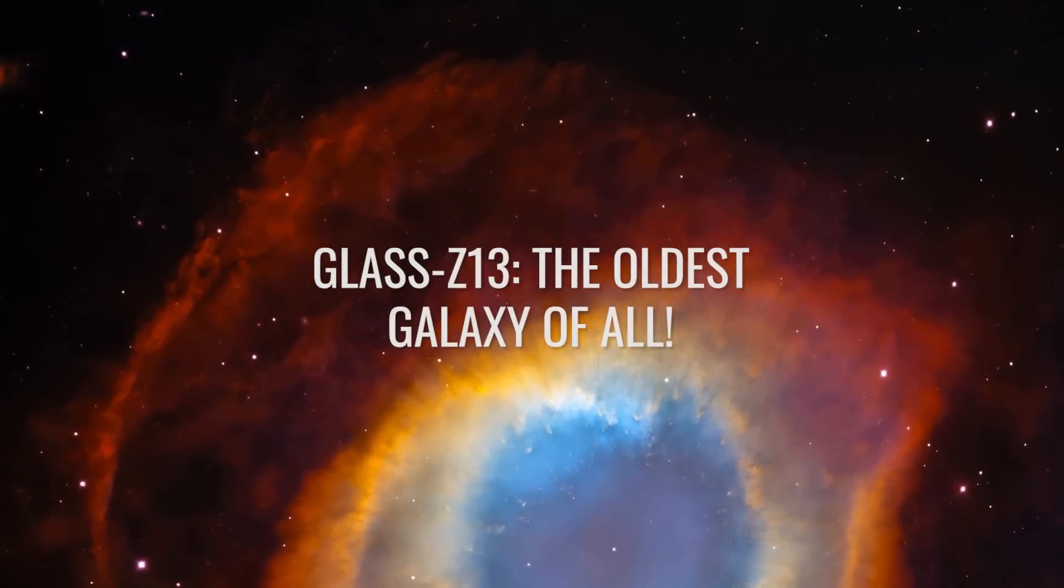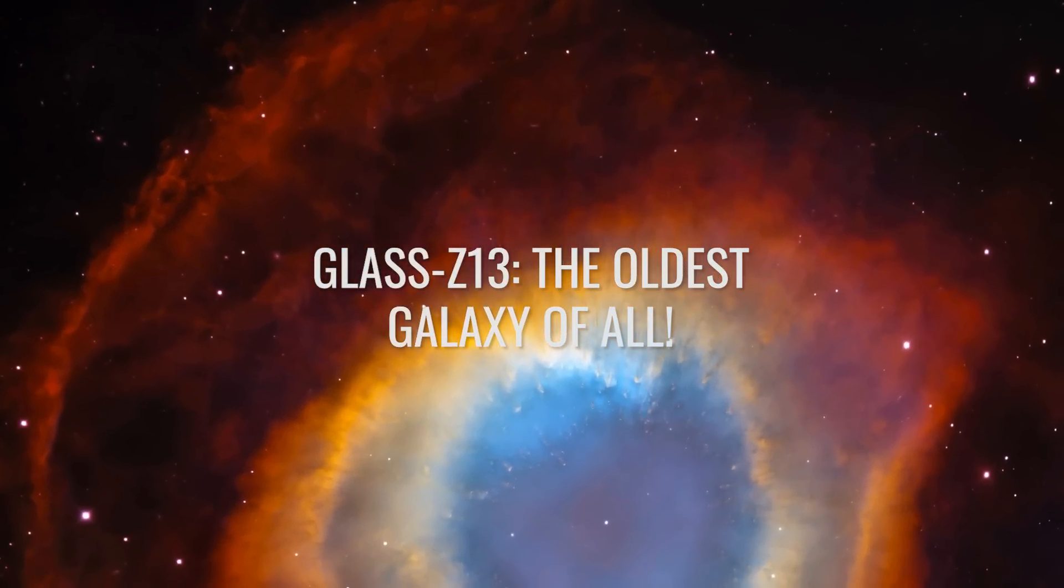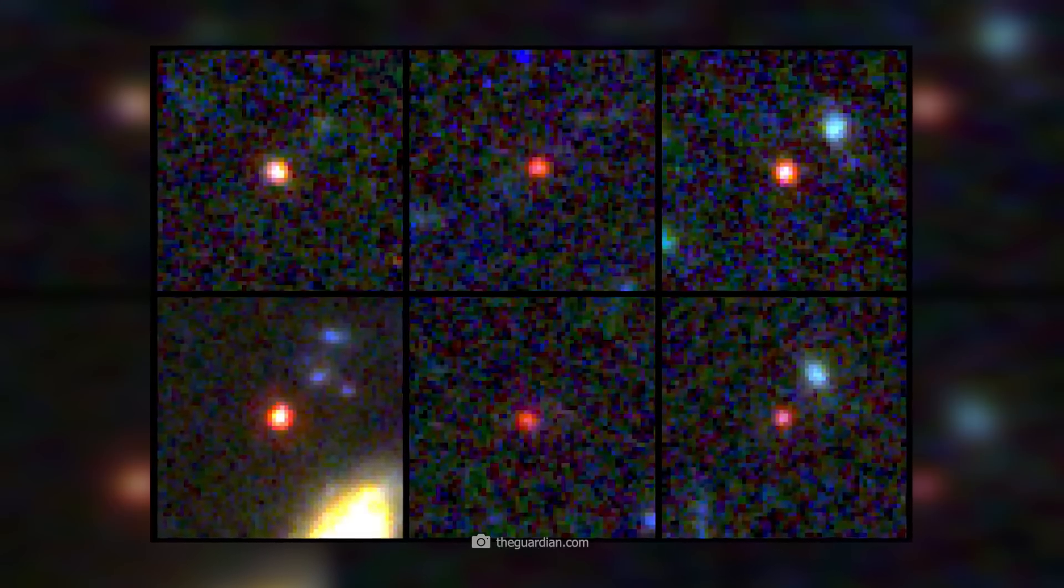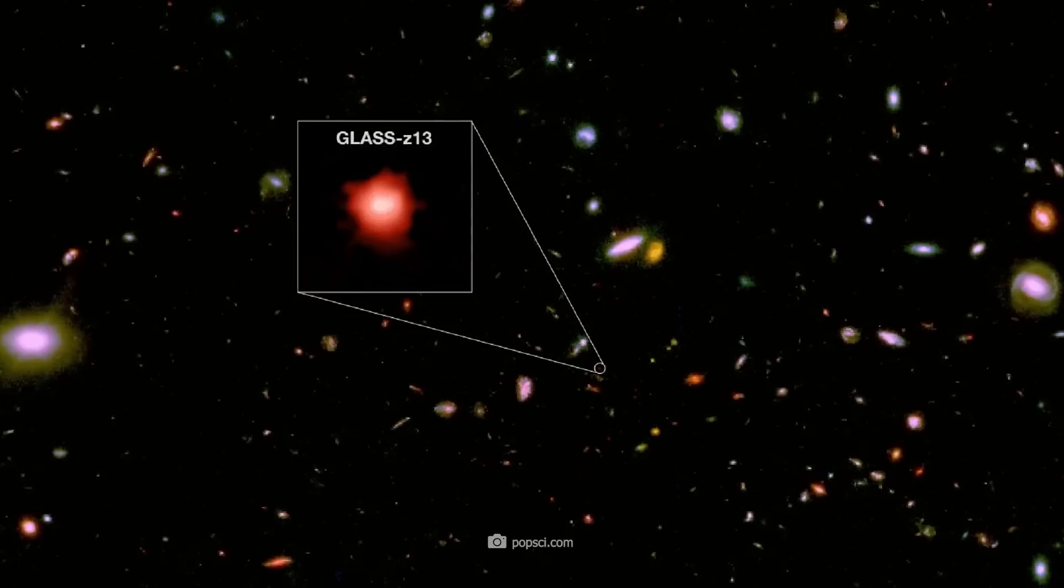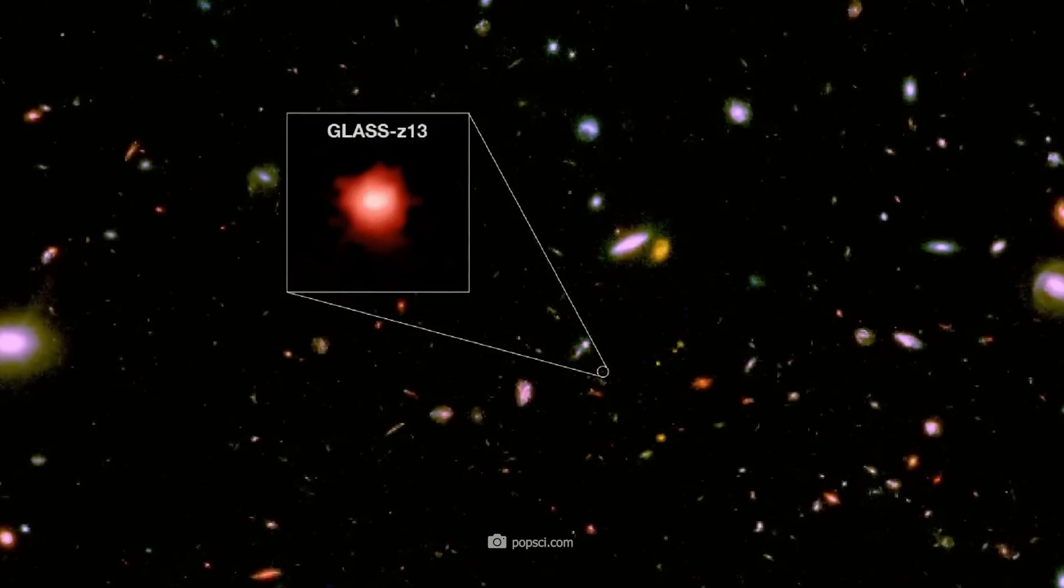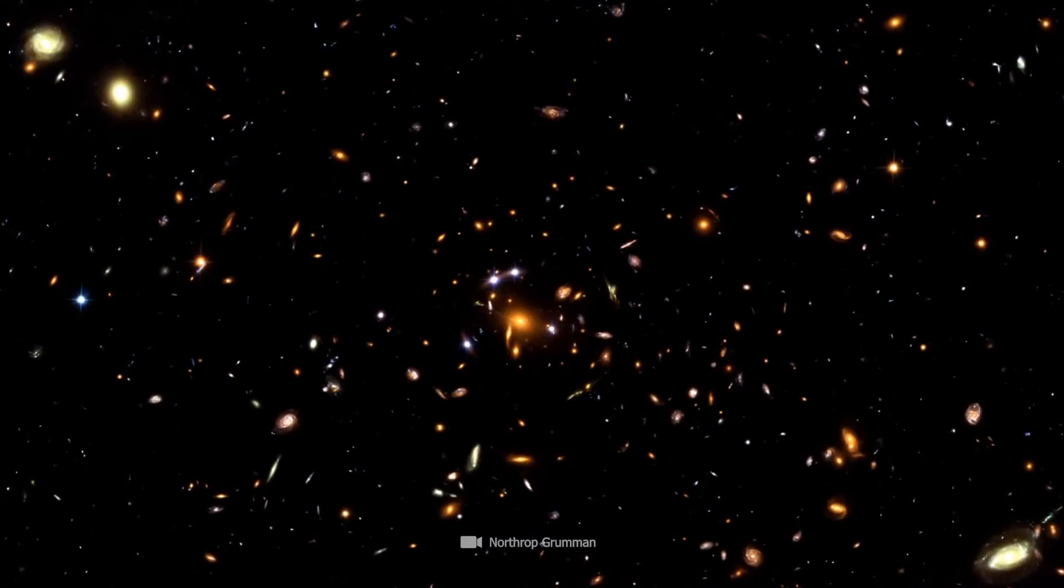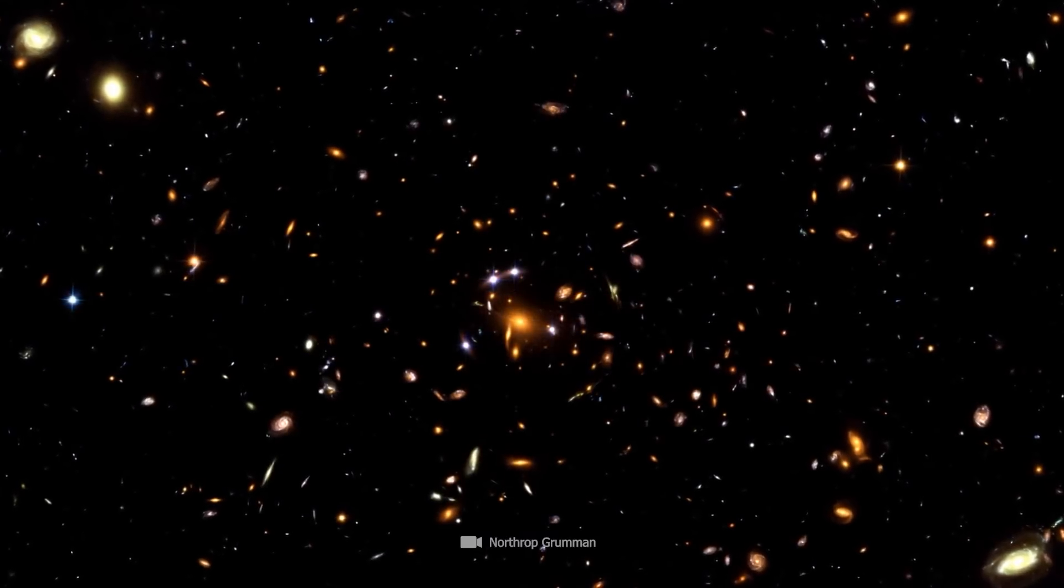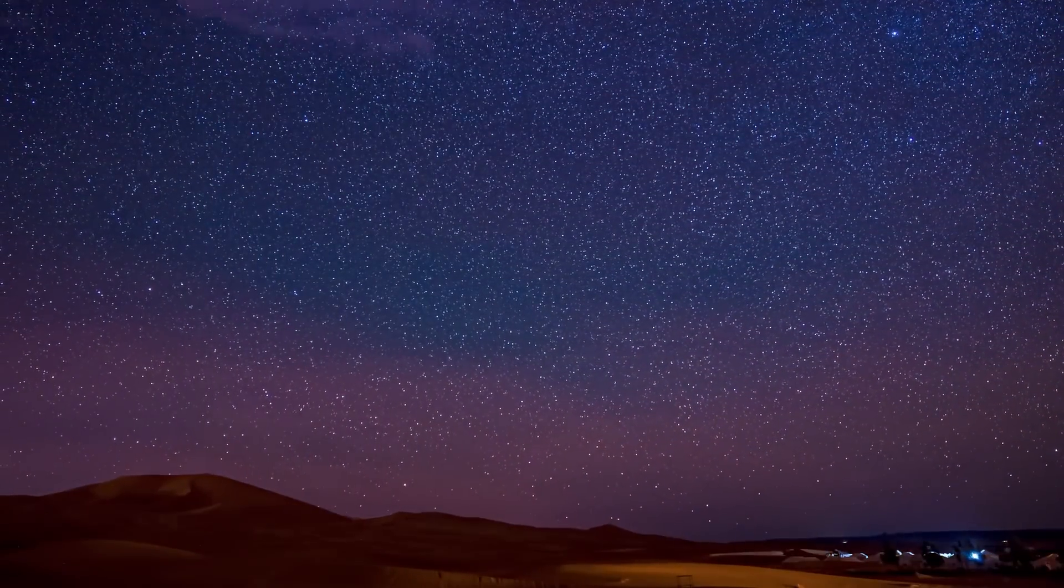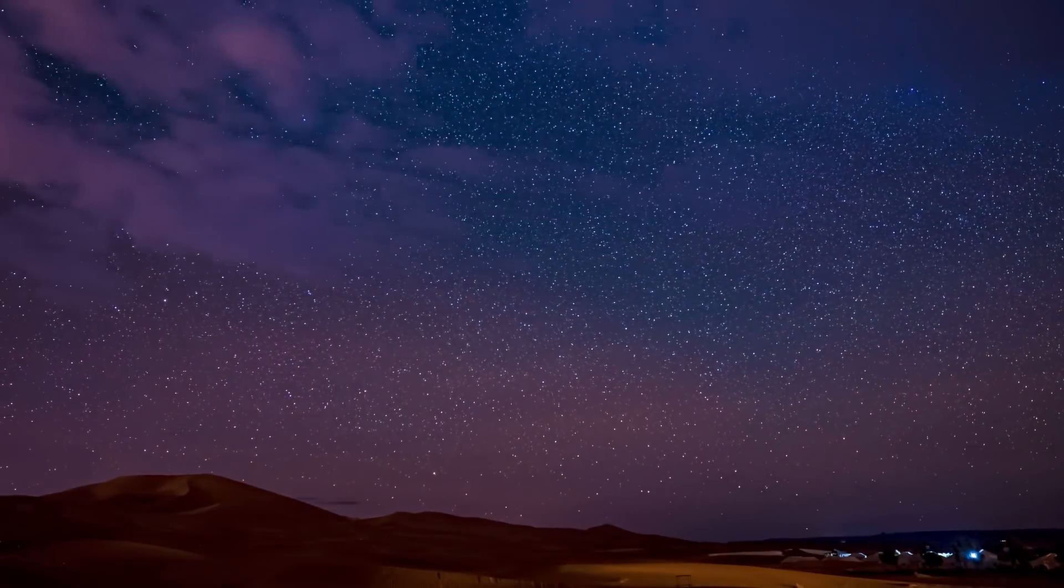Glass Z-13, the oldest galaxy of all. Michio Kaku began by introducing us to the mysteries of the latest discovery. The JWST has discovered six galaxies that existed 300 million years after the Big Bang. The oldest of these is Glass Z-13, a galaxy that is a window into a time that stretches back almost to the origin of the universe. And once again, what our eyes see and what our measurements reveal challenges the ideas of how the first galaxies formed and evolved.